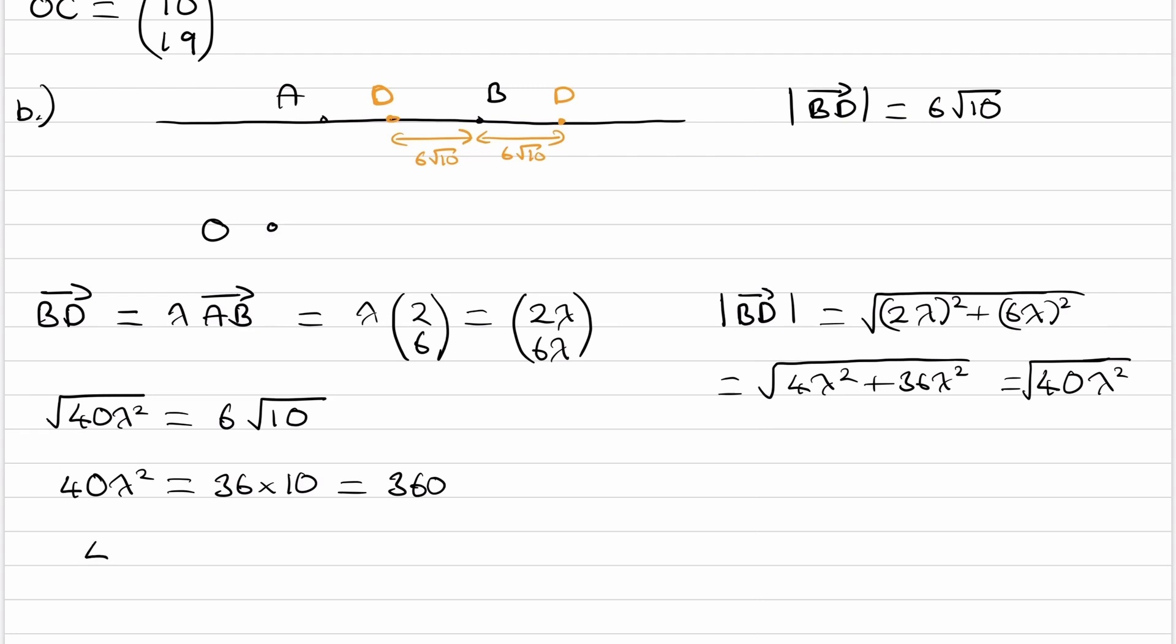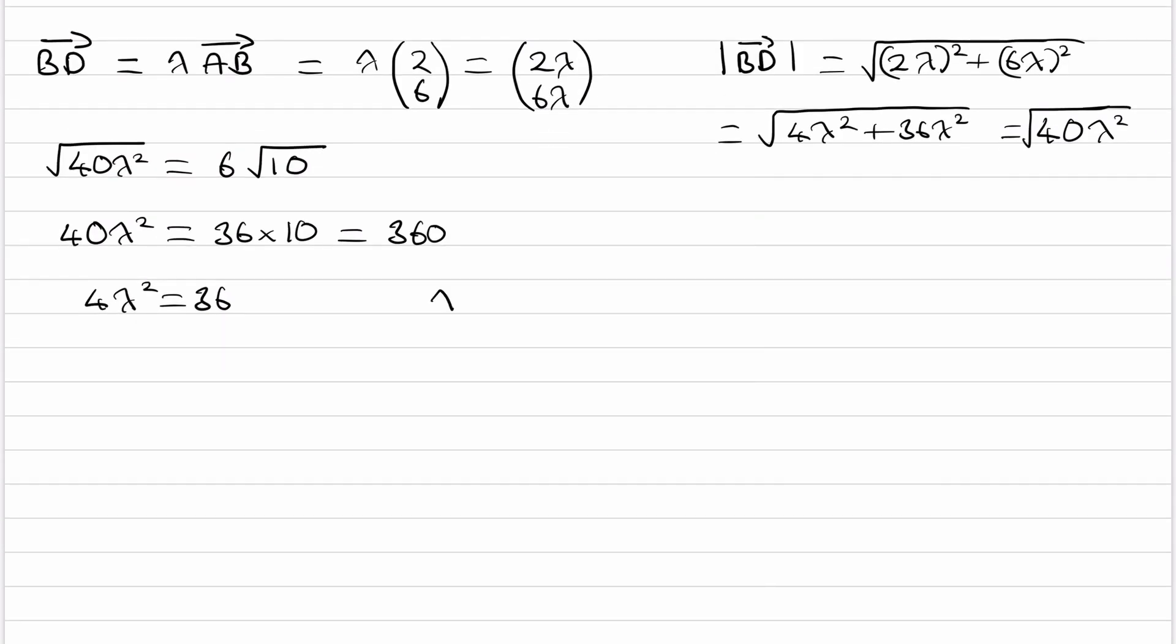And then I'm going to cancel out the zeros, so we end up with 4λ² = 36. λ² is then 36/4, or 9. λ is then ±3.